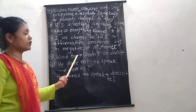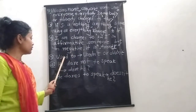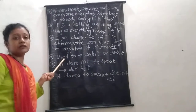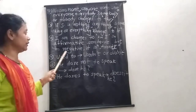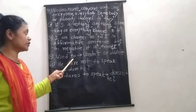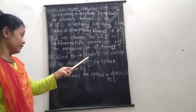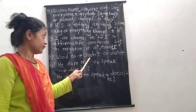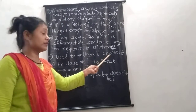Rule on 'used to': If the helping verb or main verb is 'used to', we can write the question tag as 'used to' or 'didn't'.